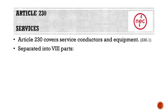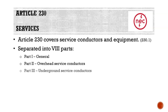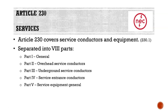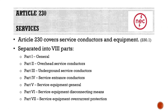Article 230 is separated into eight parts: Part 1 is general; Part 2 is overhead service conductors; Part 3 is underground service conductors; Part 4 is service entrance conductors; Part 5 is service equipment general; Part 6 is service equipment disconnecting means; Part 7 is service equipment overcurrent protection; and Part 8 is services exceeding 1,000 volts. We're primarily going to be in Parts 1 through 5, with Parts 1 through 3 being our primary concerns.